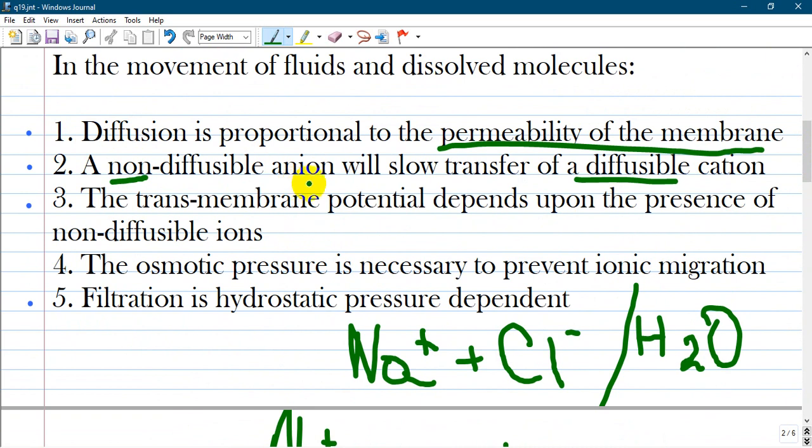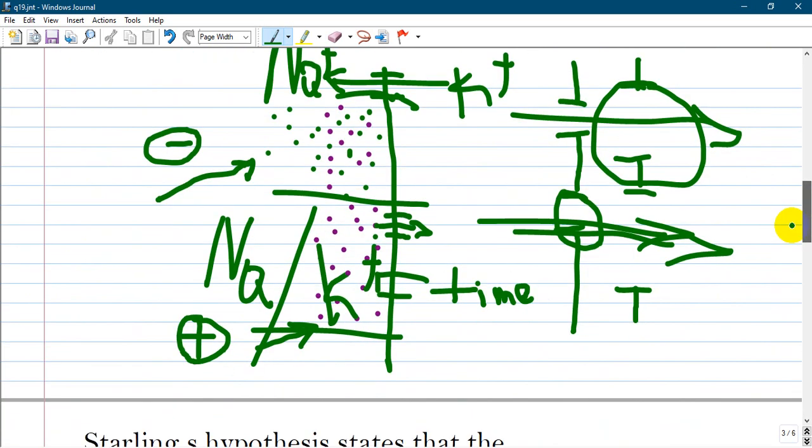A non-diffusible anion will slow transfer of a diffusible cation. For example, if you have many particles and they are mixed in one solvent.